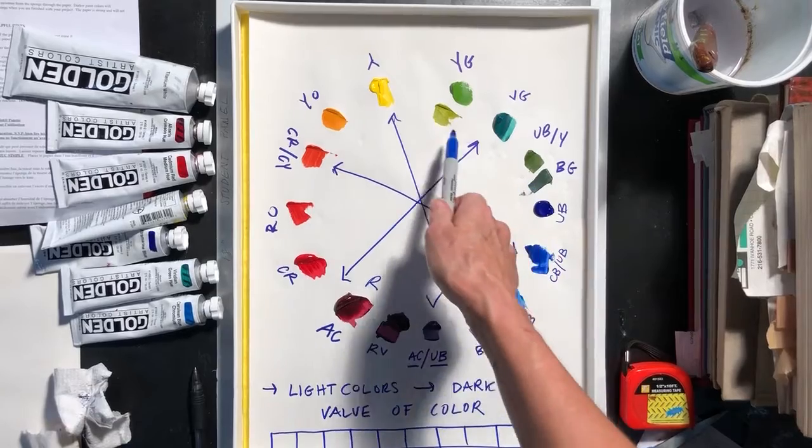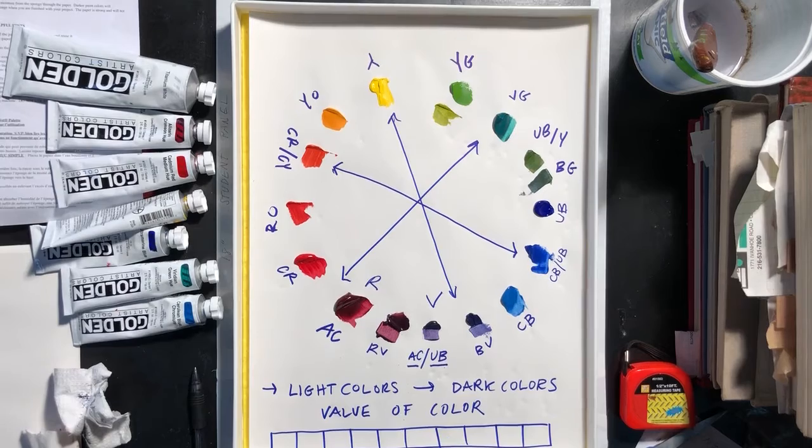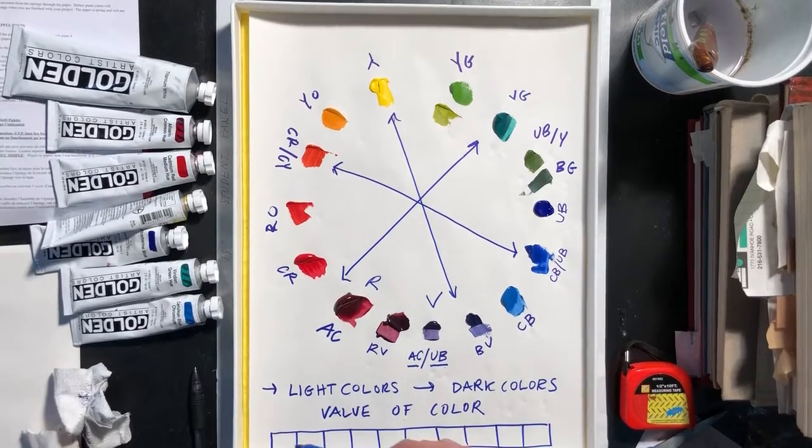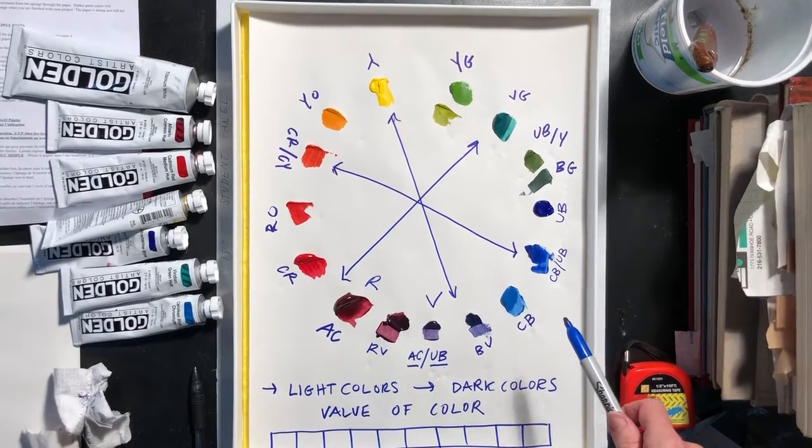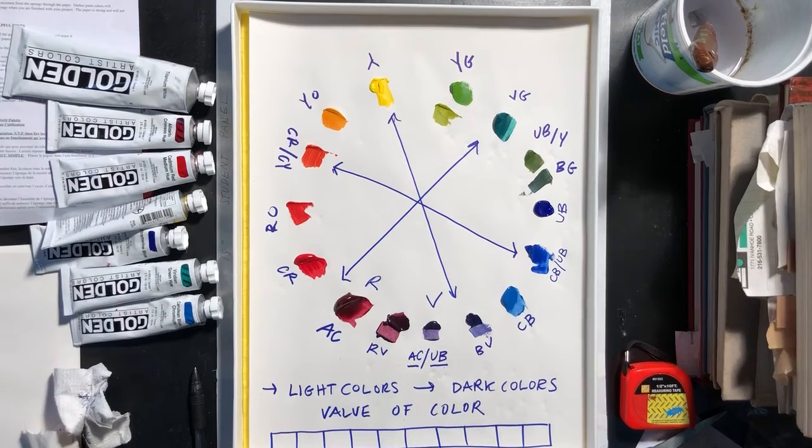You don't have to make two yellow greens. You don't have to make two blue greens or two greens. One of each is fine. But I want you to start exploring how light and how dark these colors are. And which ones you see as the darkest and which ones you see as the lightest.